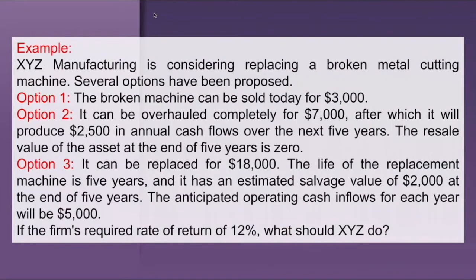Let's have an example. A company is presented with three options. Option one: the broken machine can be sold today for $3,000, and the operation will be stopped. Option two: they can overhaul the machine for $7,000. After overhauling, it can be used to produce $2,500 in annual cash flow for the next five years, and the resale value after five years is zero.